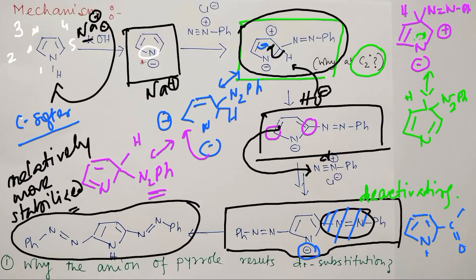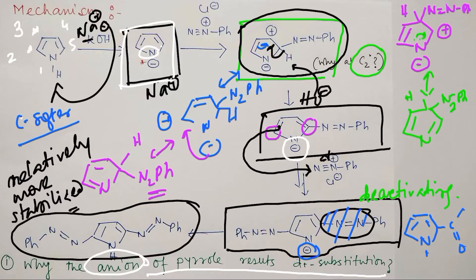Why does pyrrole anion result in disubstitution? Two key reasons: first, the pyrrole anion increases the electron density over the ring; second, as a negatively charged species, it can easily attack the electrophile. After the first substitution, the molecule remains in anionic form, which keeps the electron density sufficiently high that a further reaction with another diazonium salt is possible — that's why disubstitution occurs.